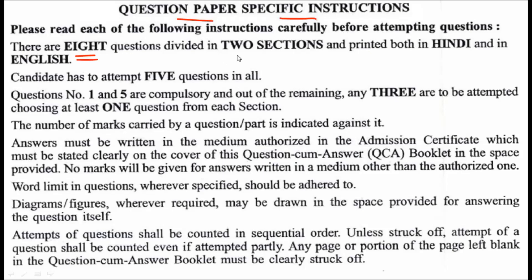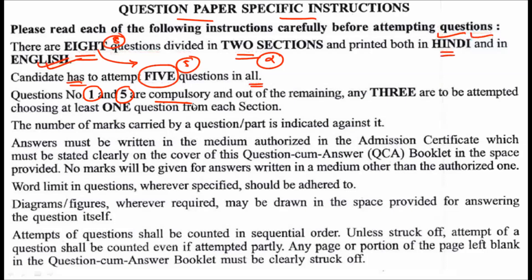There are a total of eight questions divided into two sections, printed in both Hindi and English. The candidate has to attempt five questions in all. Question number one and question number five are compulsory. Out of the remaining six questions, three are to be attempted, choosing at least one from each section.